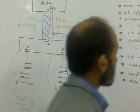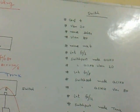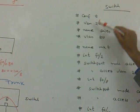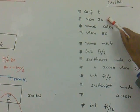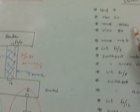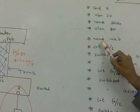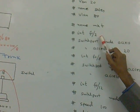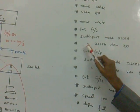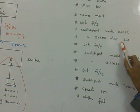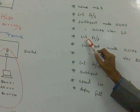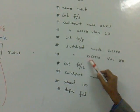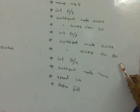Now coming to the configuration part of the switch. Go to config T global configuration mode: VLAN 20, name sales; then VLAN 80, name marketing. Go to interface F0/2, switchport mode access, switchport access VLAN 20. Interface F0/8, switchport mode access, switchport access VLAN 80.